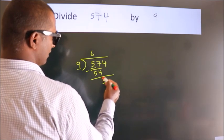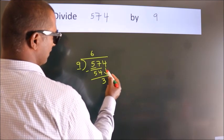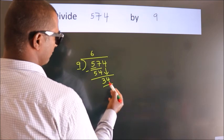After this, bring down the beside number. So, 4 down. So, 34.